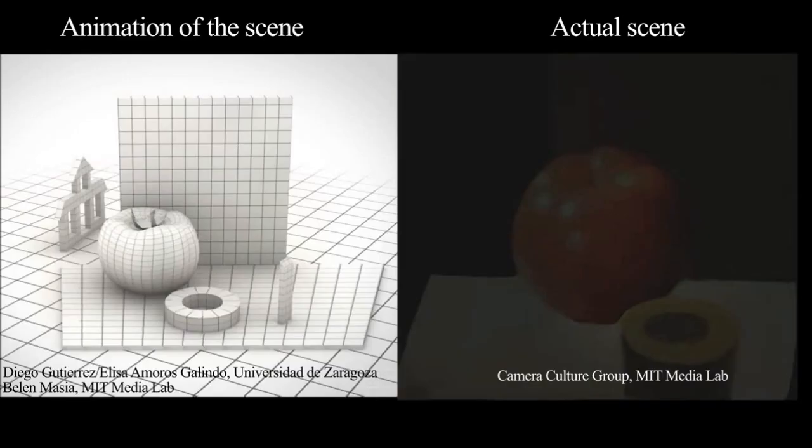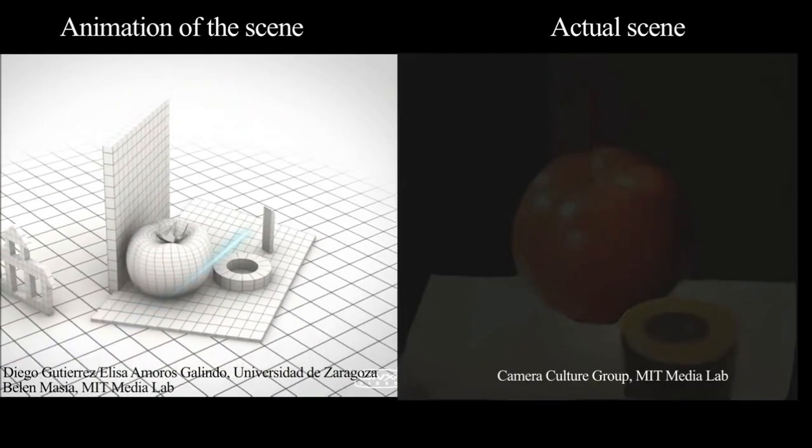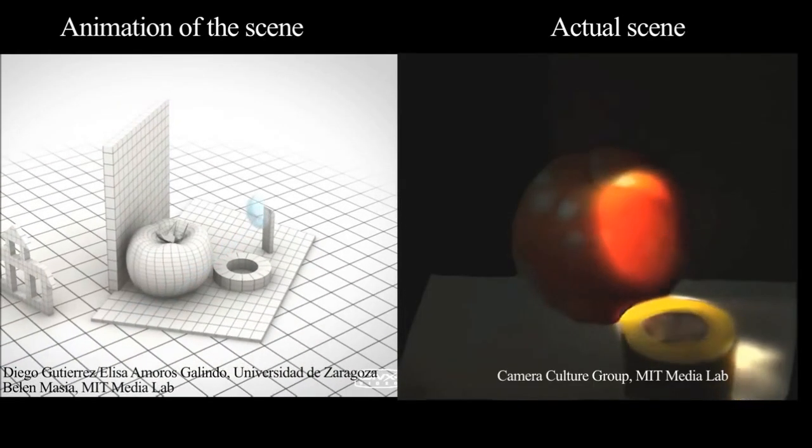Such a camera may be useful in medical imaging, industrial or scientific use, and in the future even for consumer photography. In medical imaging, we can now do ultrasound with light because we can analyze how light will scatter volumetrically inside the body. In industrial imaging, one can use the scattered light to analyze defects in materials.